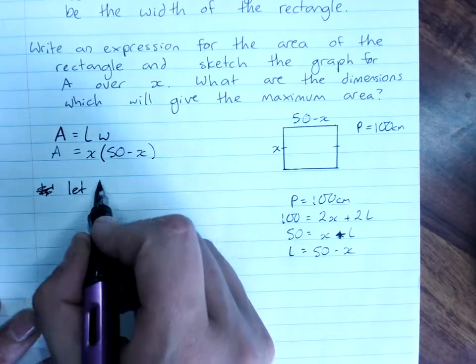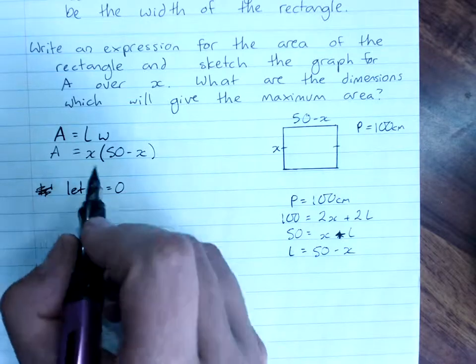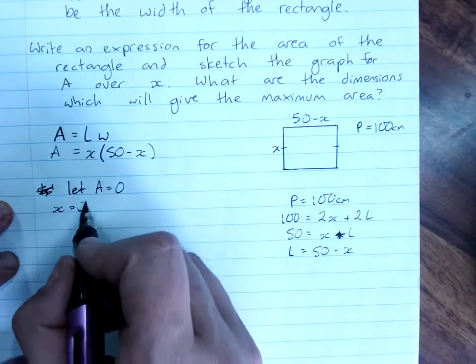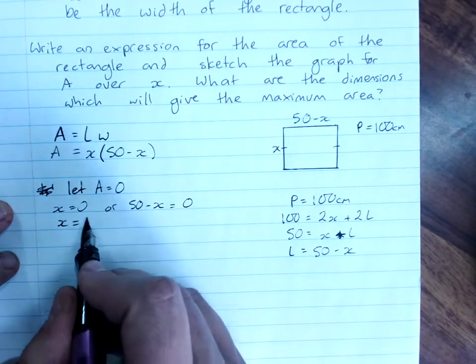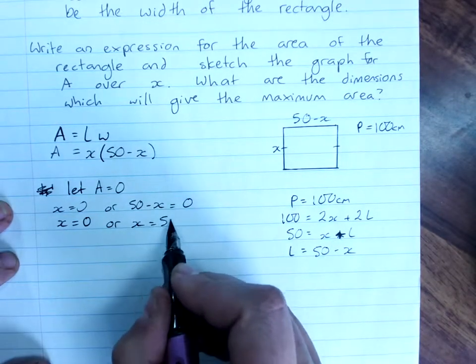So let the area equal 0, because the area takes our y value. And we want to be finding our x-intercepts. x equals 0 or 50 minus x equals 0. So x equals 0 or x equals 50.